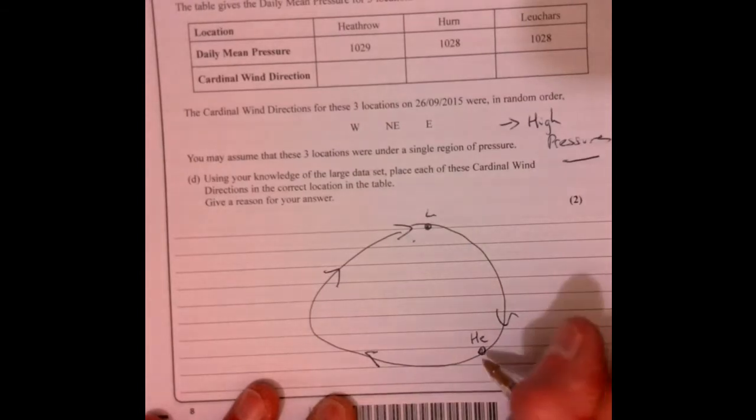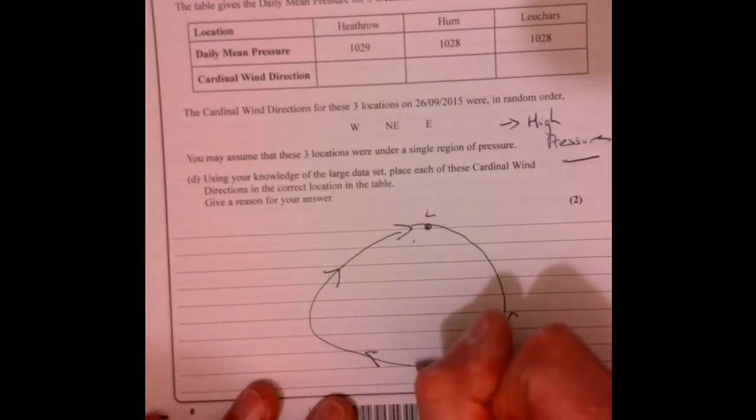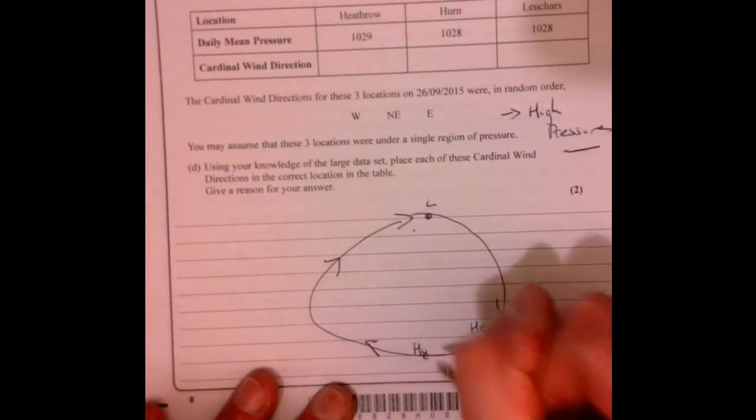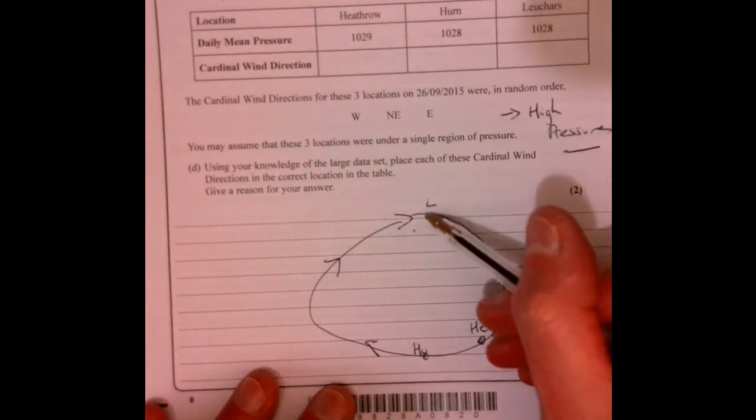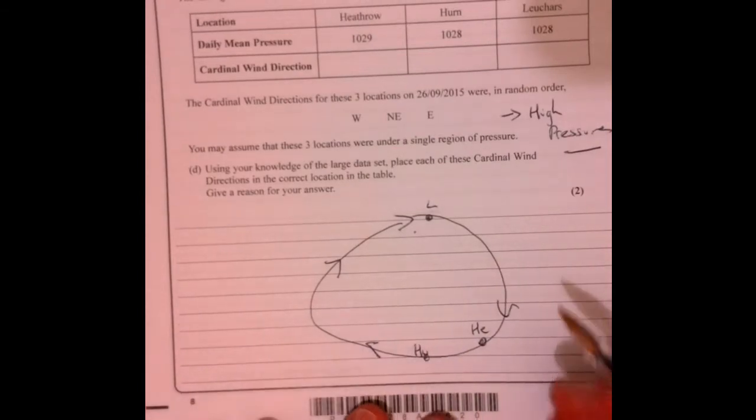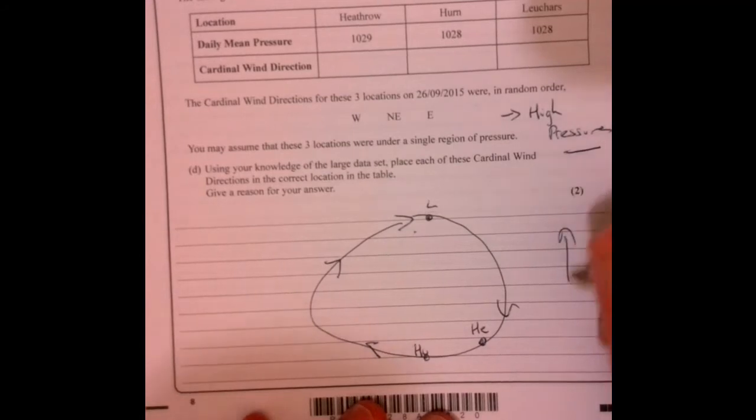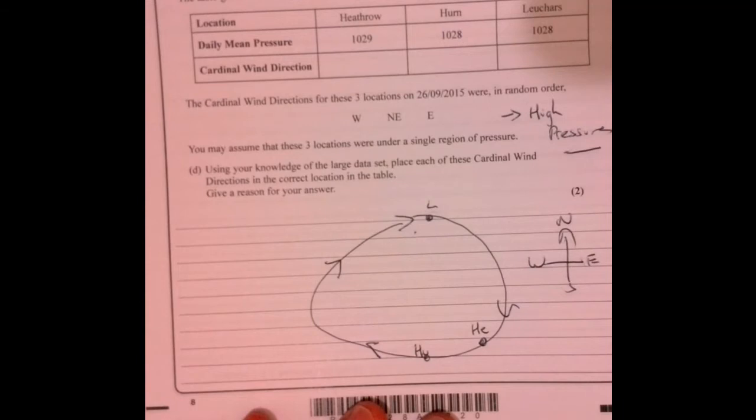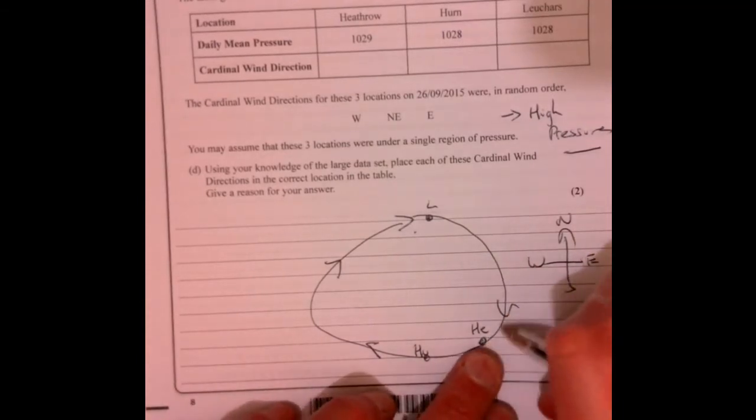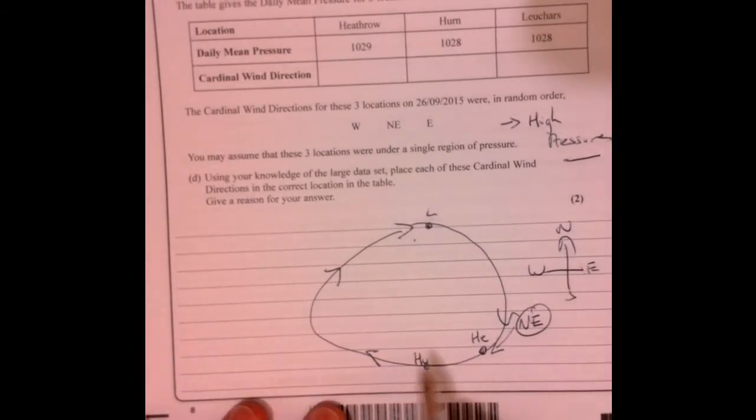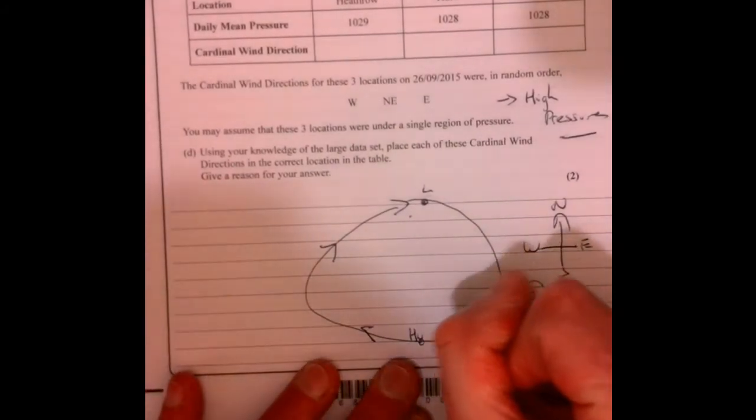And then we've got Herne which is sort of near Bournemouth. Don't criticize me too much from the geography here, but roughly in the right place. So the weather system is going around in this direction, and when we talk about wind we say about where the wind's coming from. Never eat shreddy wheat, right? So if we imagine Heathrow, it's going to be coming from this direction, so it's actually coming from the northeast. And then Herne is coming from the east.